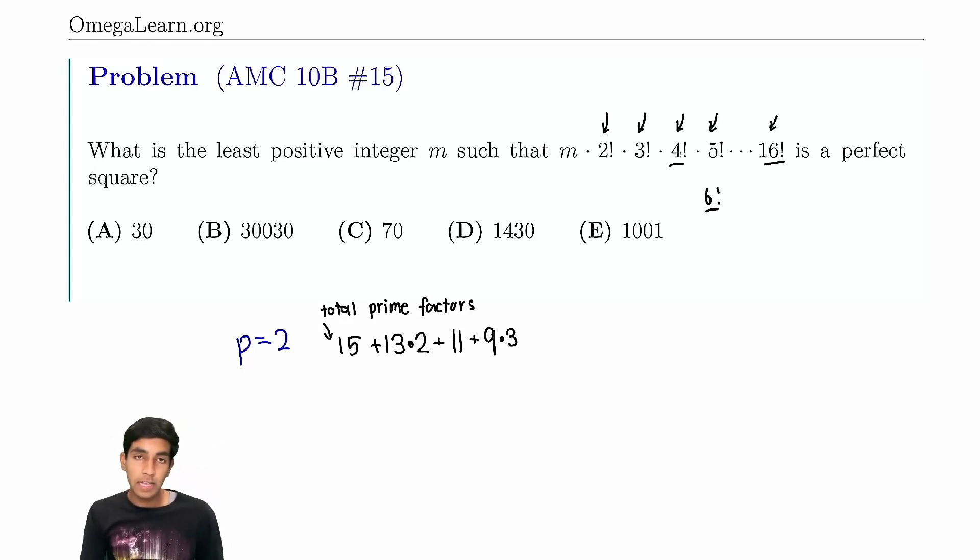Okay, and then 10, well, 10 has 1 factor of 2, but 10 to 16, there's 7 of them. So 7 times 1, right? Well, 12 has 2 factors of 2. 12 to 16, there's 5 of those numbers. So 5 times 2. What's next? 14. 14 has 1 factor of 2. So from 14 to 16, there's 3 of those numbers. So just 3 times 1. And then finally, 16. 16 just has, it's only one number which has a 16 in it, and that's an additional, so 1 times 4, because 16 has 4 factors of 2.